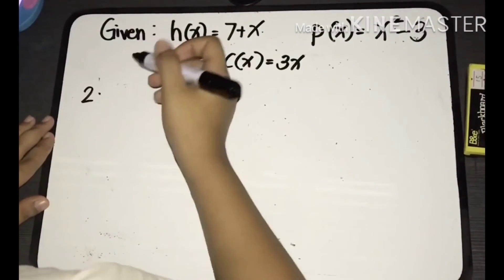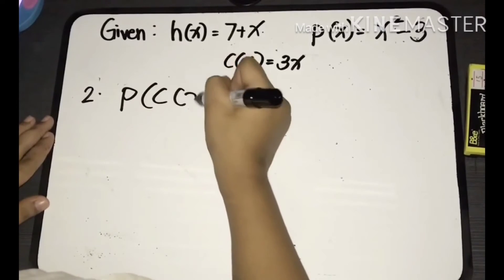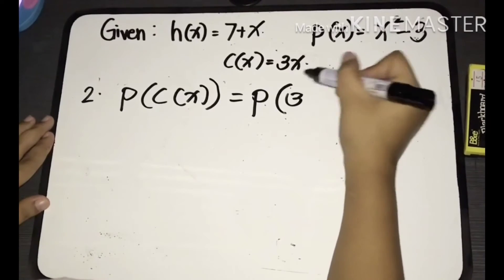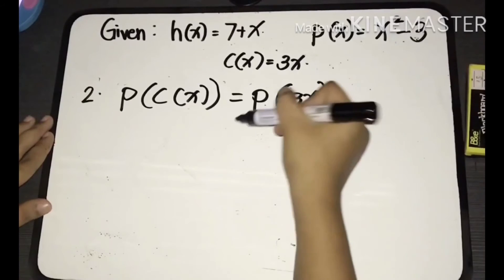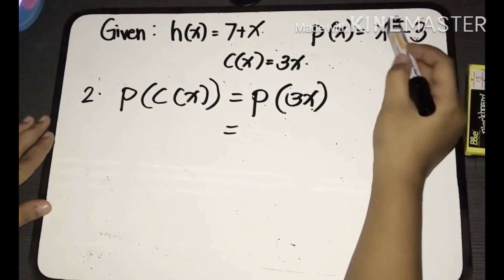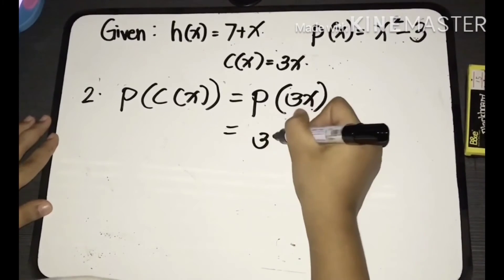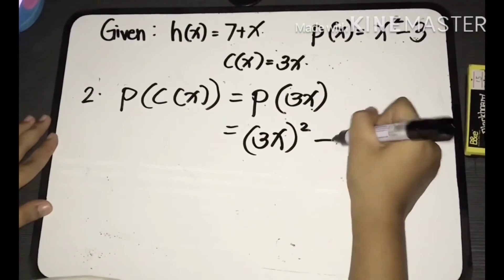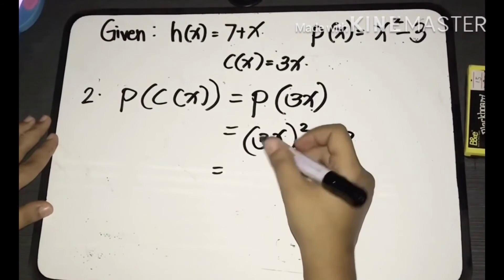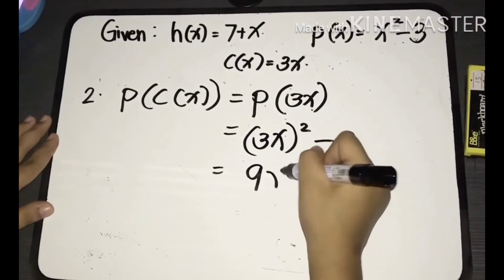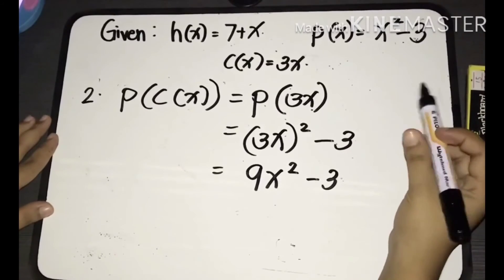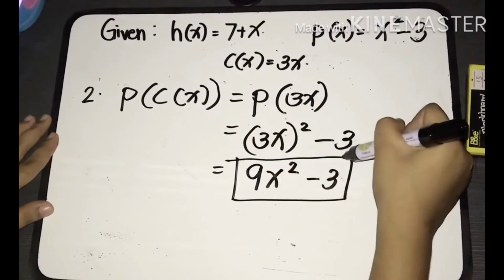Next, we are to find p of c of x. Copy p, then substitute the value of c of x, which is 3x — so we have p of 3x. Substitute 3x into the variable x of the function p: we'll have (3x) quantity squared minus 3. Distributing the exponent, 3 squared equals 9, so we get 9x squared minus 3. That is the final answer for p of c of x.